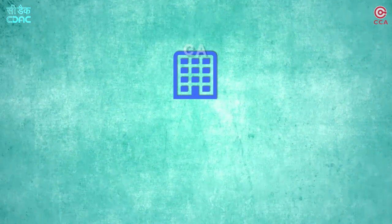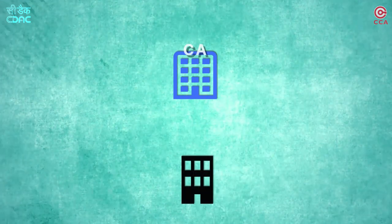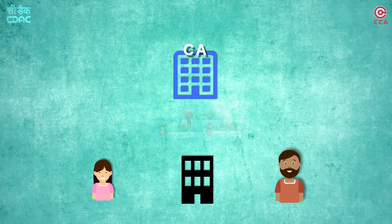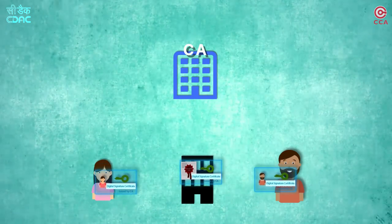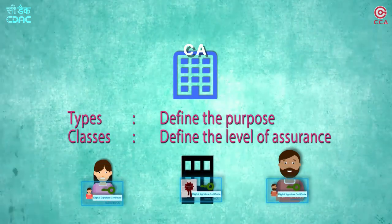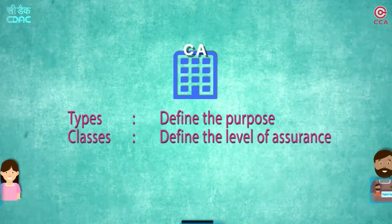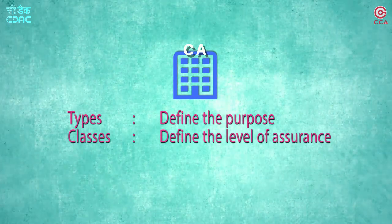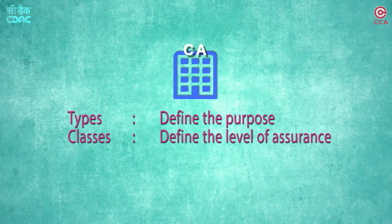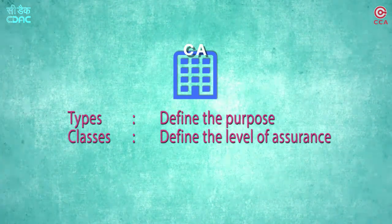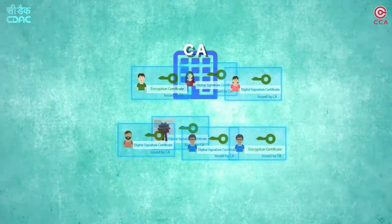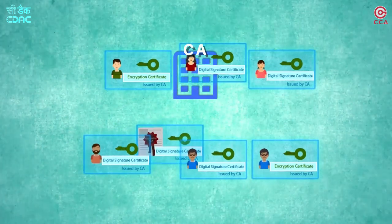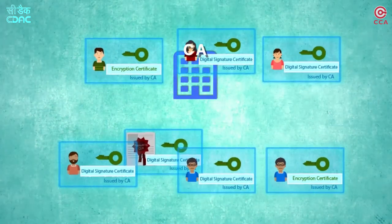CAs form the pillar of PKI infrastructure. They verify, issue and revoke various types and classes of certificates to individuals and organizations for various purposes including digital signing, encryption, etc. While types define the purpose for which a certificate is issued, classes define the level of assurance for the relying party. In India, class 2 and class 3 certificates are demanded in all applications, with class 3 providing the highest level of assurance as it is issued after verifying the credentials of the user as well as the organization that he or she belongs to.